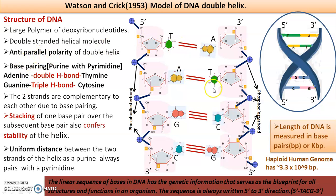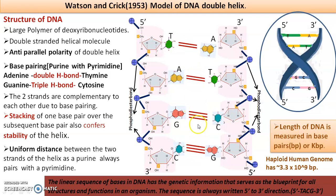The word 'parallel' refers to the fact that the distance between the two strands of the helix is uniform. Though pyrimidine is one ring and purine is two rings, and they may be arranged randomly, still — wherever you see a purine on one strand, the other strand has a pyrimidine. So purine always pairs with pyrimidine, meaning the distance between the two remains the same throughout the length of the chain. Adenine always binds to thymine with a double hydrogen bond, and guanine with cytosine with a triple hydrogen bond.